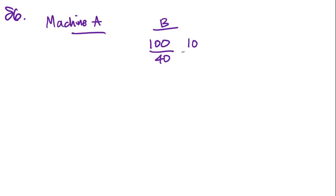That's the same as producing 10 parts in 4 minutes. And machine A produces 100 parts twice as fast. So if it's 10 parts in 4 minutes, twice that speed would be 10 parts in 2 minutes.